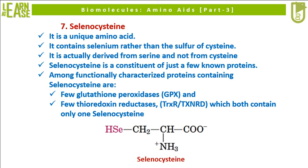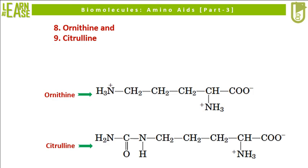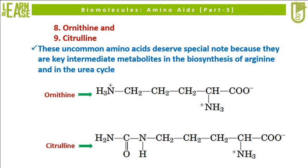Two more uncommon amino acids are ornithine and citrulline. Both deserve special note because they are key intermediate metabolites in the biosynthesis of arginine and in the urea cycle. All the uncommon amino acids illustrated in this video are just a few among several known uncommon amino acids; others also exist in nature.